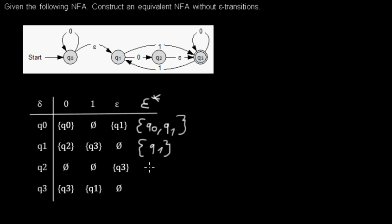So here in Q2, when forming the epsilon closure, I add Q2 because it's just the state itself.